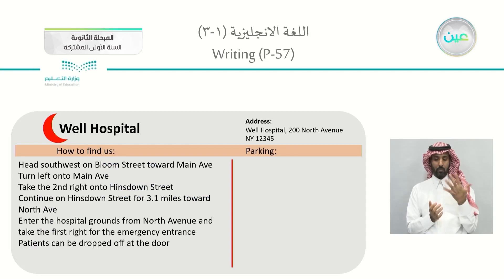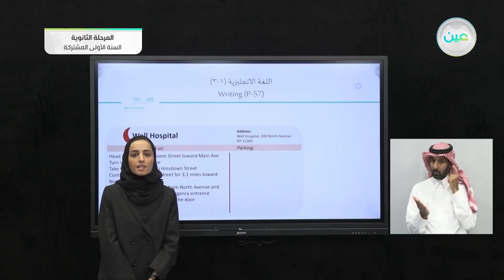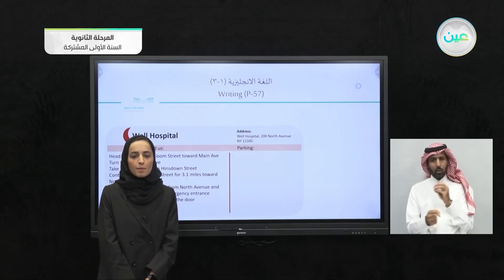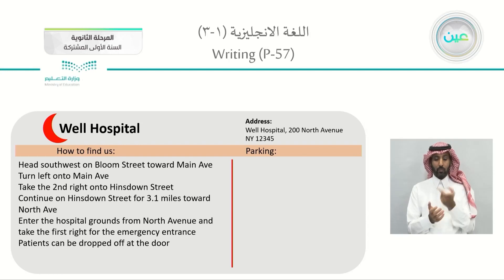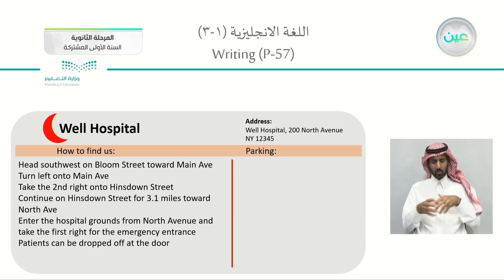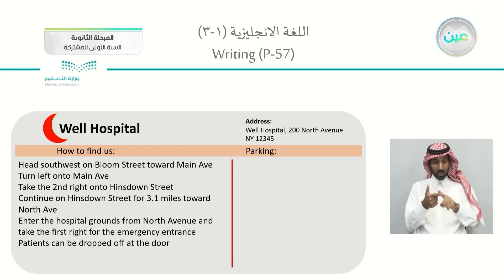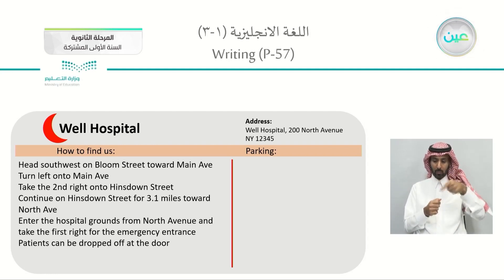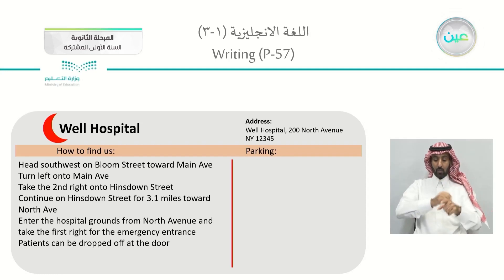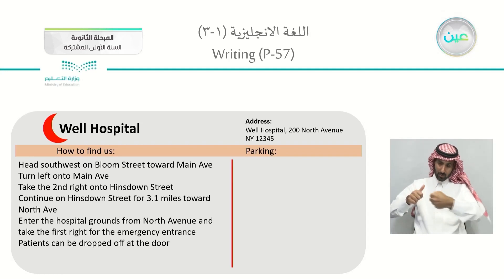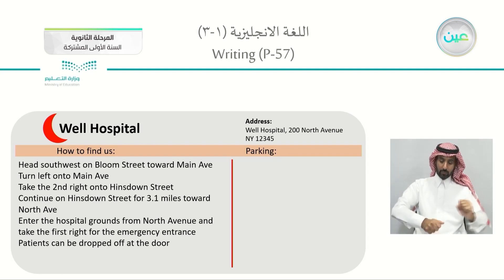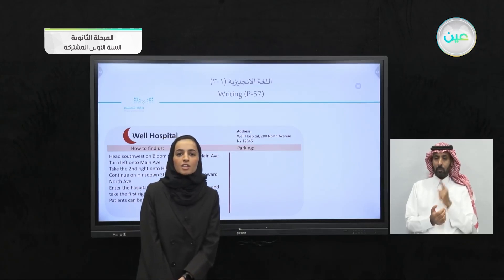On your new book's page 57, we have this card. You are supposed to listen and tell what the speaker is telling us about. Let's listen. How to find us: head southwest on Bloom Street toward Main Avenue. Turn left onto Main Avenue. Take the second right onto Hinsdown Street. Continue on Hinsdown Street for 3.1 miles toward North Avenue. Enter the hospital grounds from North Avenue and take the first right for the emergency entrance. Patients can be dropped off at the door.